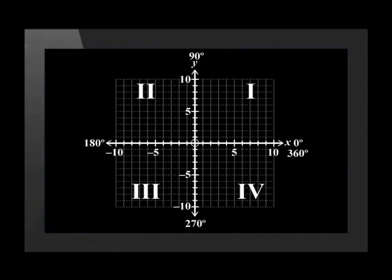We have gone over some very important points so far, and you will need to learn them off by heart. Let's recap: Quadrant 1 is between 0 and 90 degrees. Quadrant 2 is between 90 and 180 degrees. Quadrant 3 is between 180 and 270 degrees. Quadrant 4 is between 270 and 360 degrees. All trig ratios are positive in quadrant 1. Only sine is positive in quadrant 2. Only tan is positive in quadrant 3. Only cos is positive in quadrant 4. The other ratios are negative in each of those quadrants. This is often referred to as the CAST diagram.